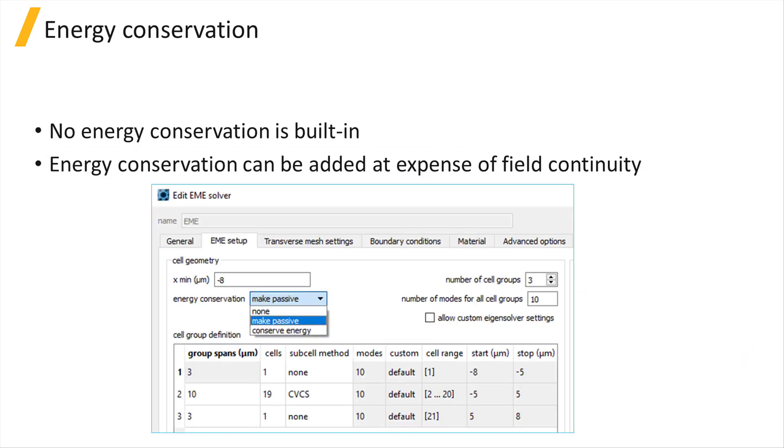The EME method finds the best solution for the S matrix that minimizes any discontinuities in the tangential E and H fields at the interface for the finite number of modes that are used. As a result, the standard EME method does not have any notion of energy conservation built into it.